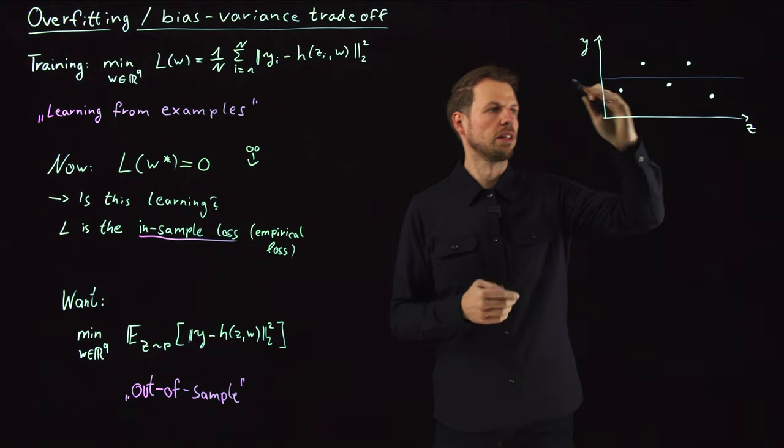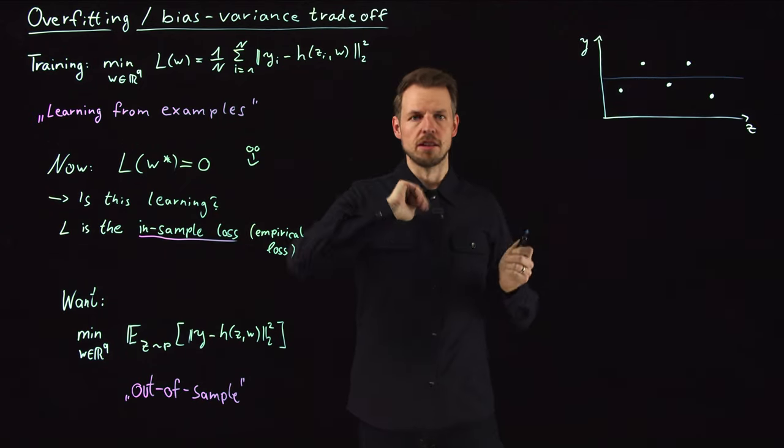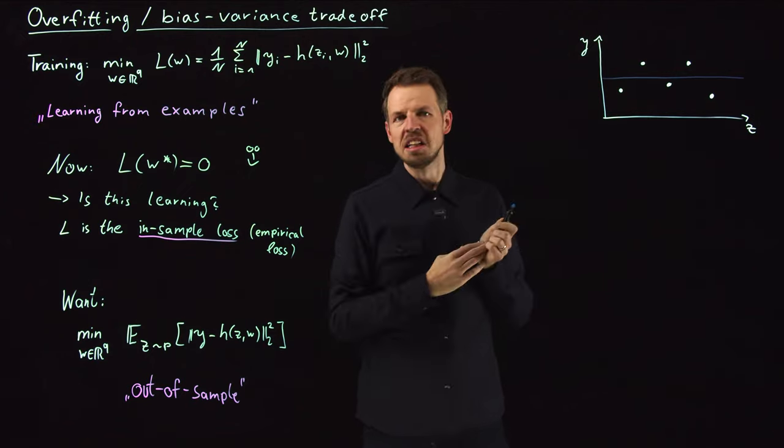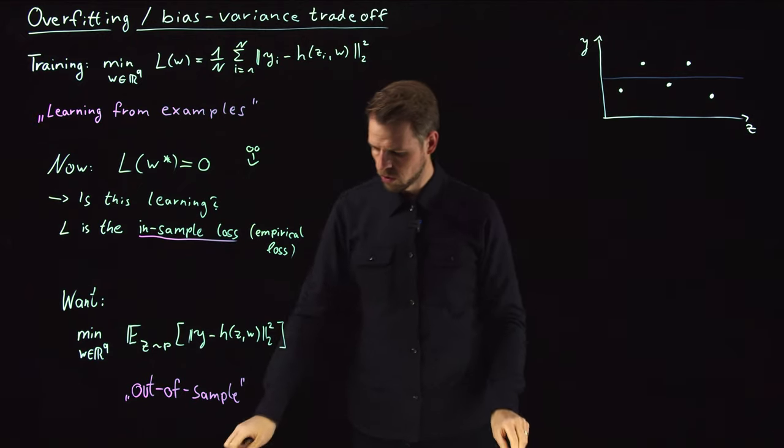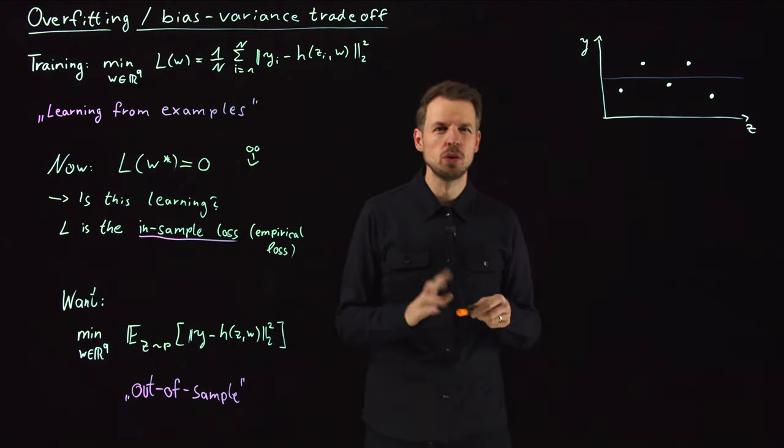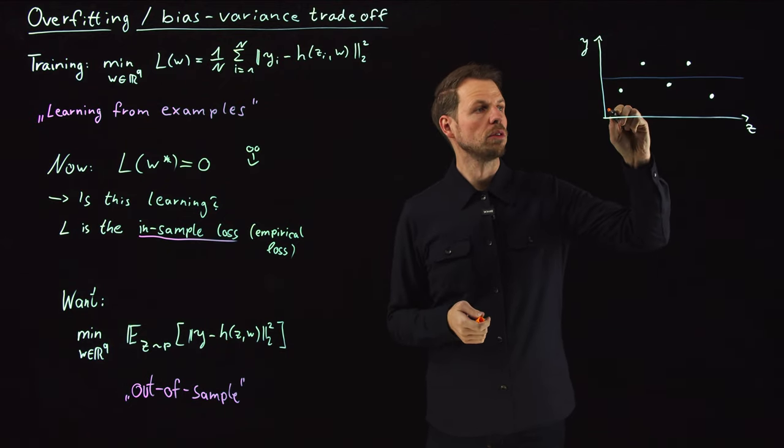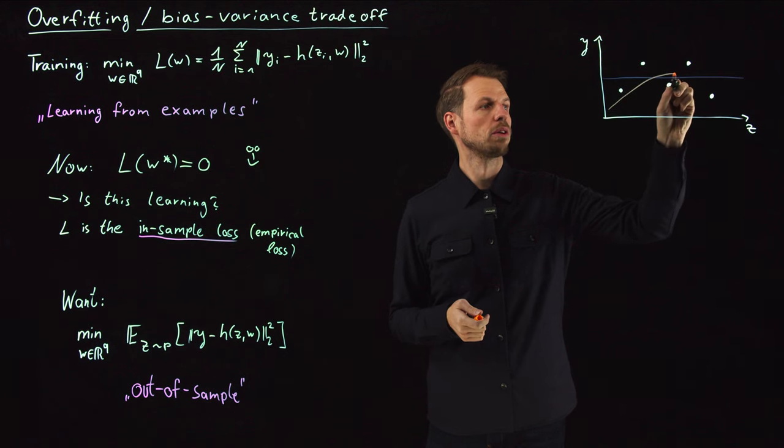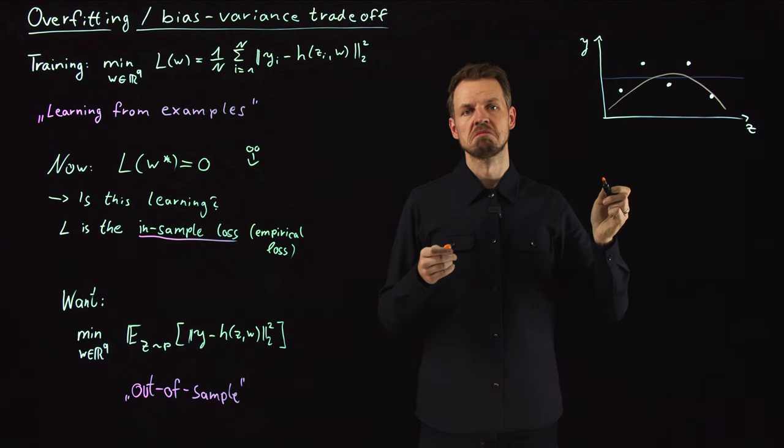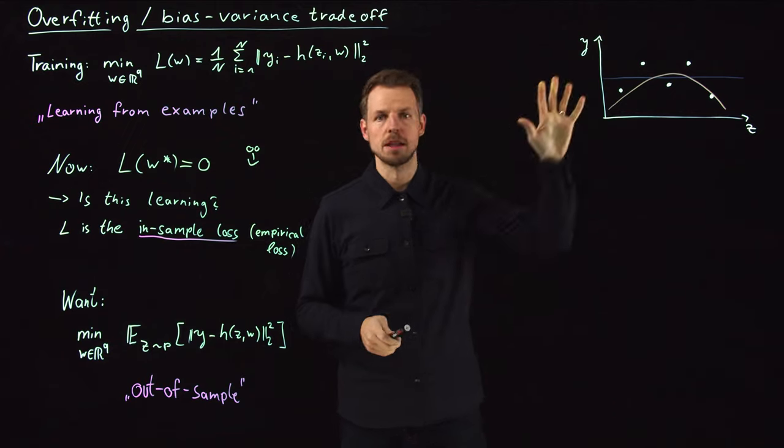Clearly not a very good model. Maybe we have chosen too few degrees of freedom. So maybe you can try to fit a line or a parabola. Let's assume this parabola might look something like this, roughly like this maybe. It clearly has a smaller in-sample loss.